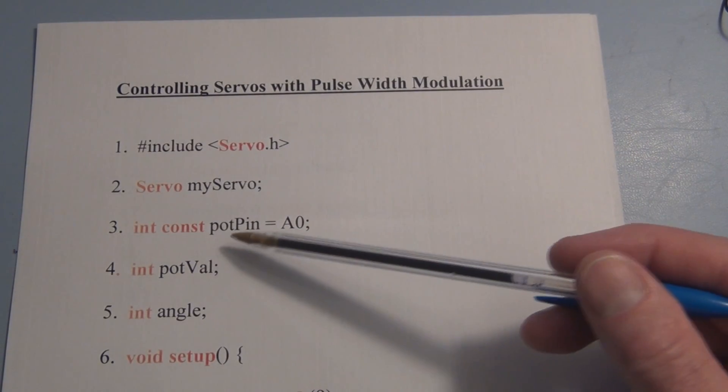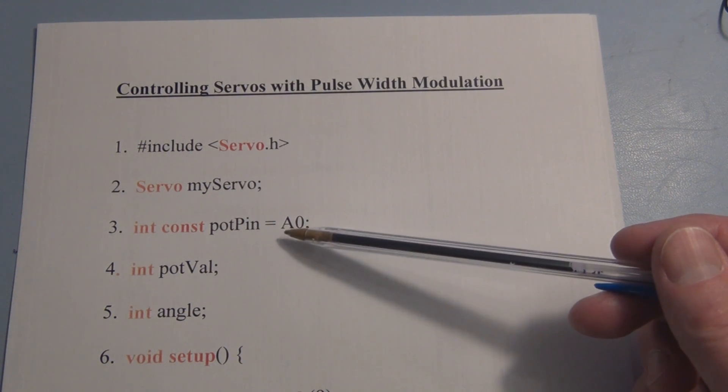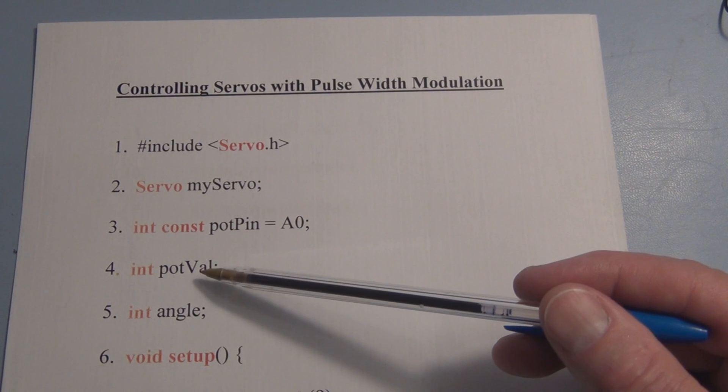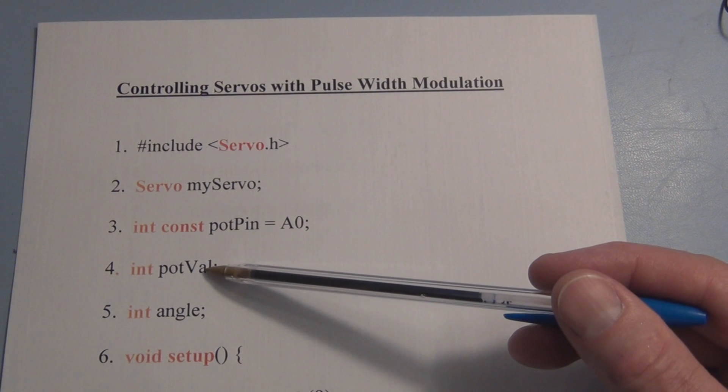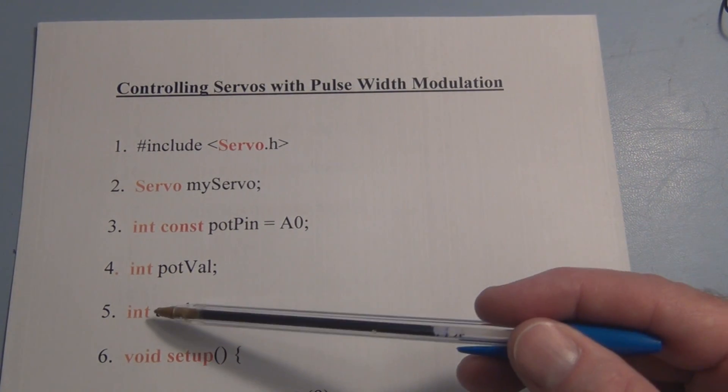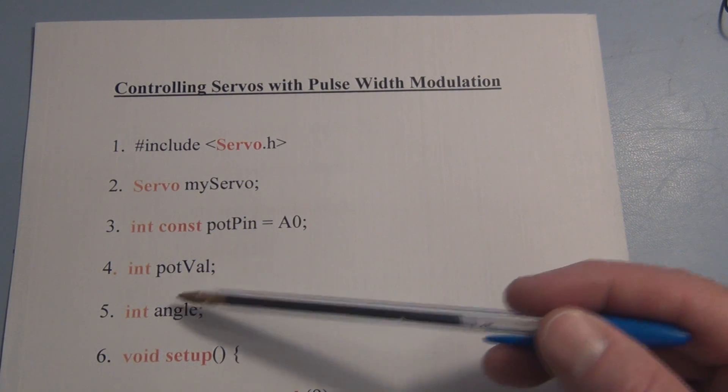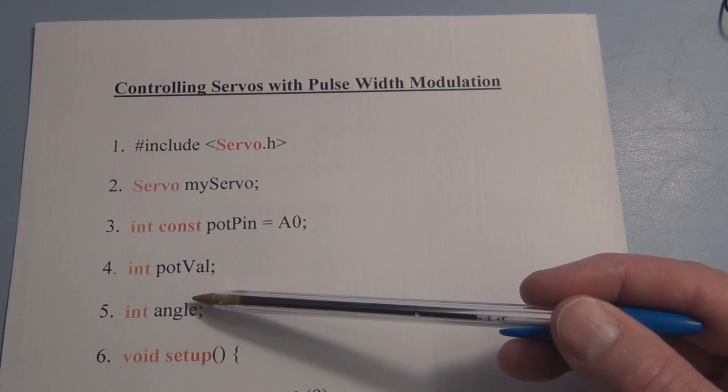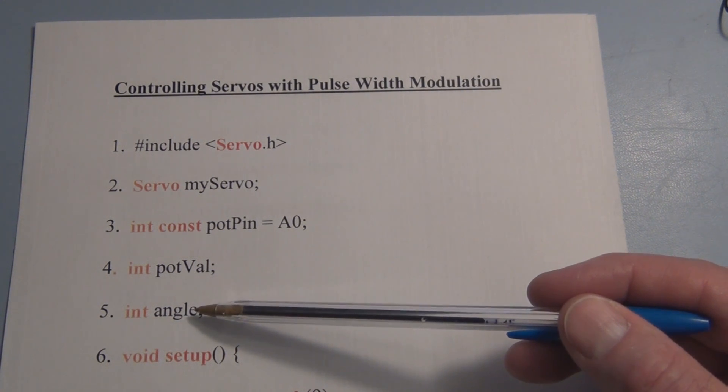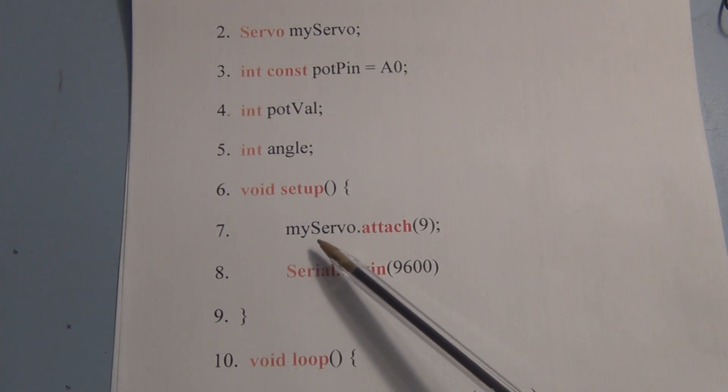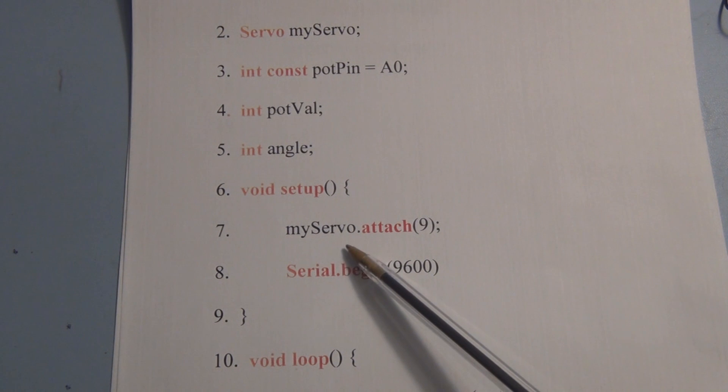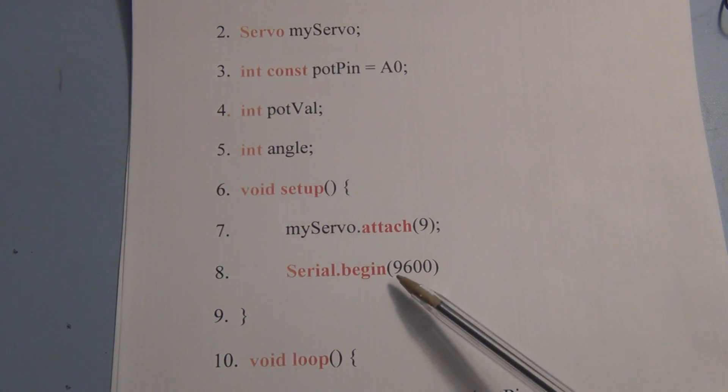Next we'll create a named constant for the pin that the potentiometer is attached to in this case A0 and then we're going to create two variables. One potVal is going to hold the analog value measured at A0 and then we're going to create the integer variable angle that will hold the angle value we want the servo to move to. Next we use the void setup function and we're going to tell the Arduino which pin we have the servo attached to with myServo.attach(9) and then we're going to set up serial communication and start displaying information in the serial monitor program.